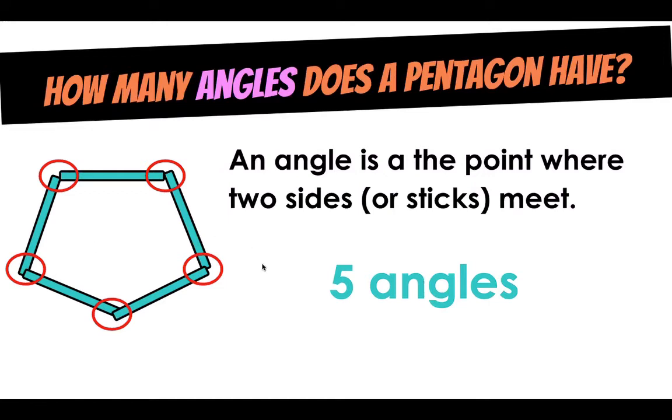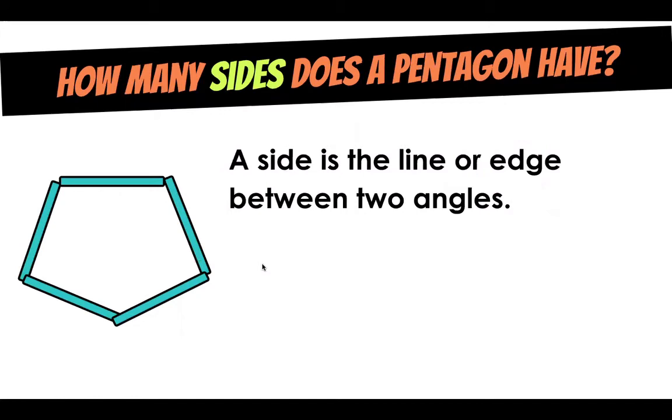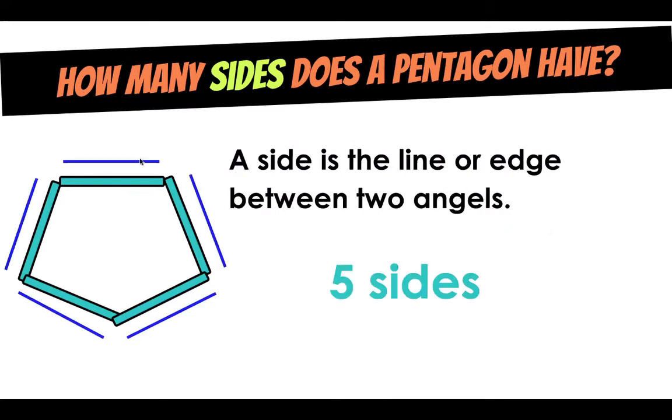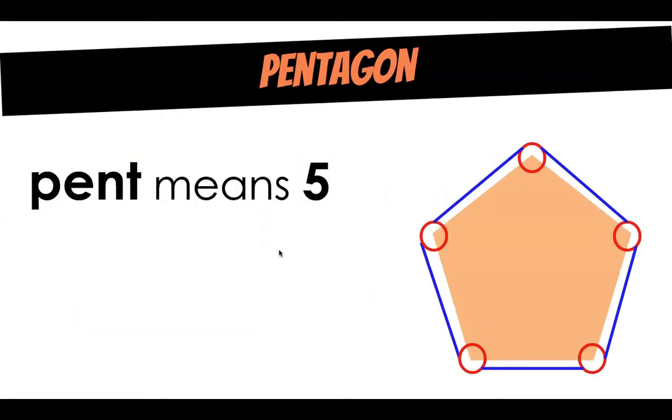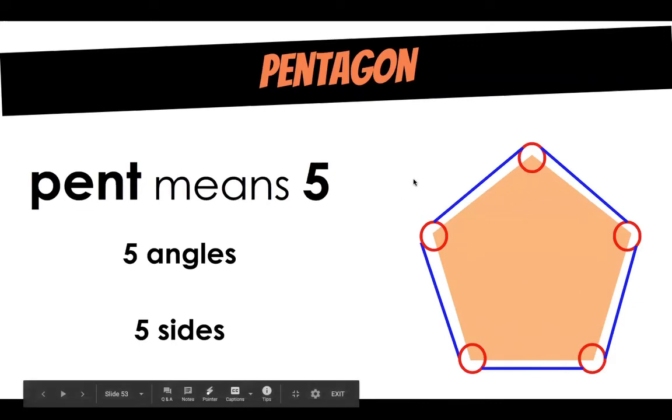Now I bet you can guess what the next question is. How many sides does our pentagon have? Can you count up the sides? Five sides. One, two, three, four, five. Now just like all our other shapes, pent means five. So all pentagons have five angles and five sides.